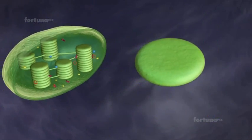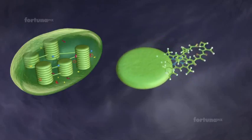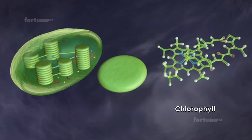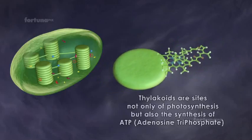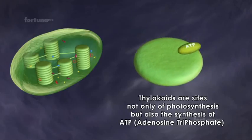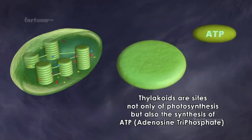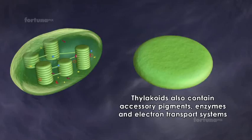On the surface of the thylakoids, molecules of green pigment called chlorophyll are present. Thylakoids are the sites not only of photosynthesis, but also the synthesis of ATP, otherwise known as adenosine triphosphate. The thylakoids also contain accessory pigments, enzymes and electron transport systems.